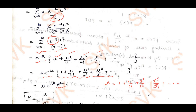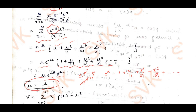Applying laws of indices, e to the power minus mu, multiplied by e to the power mu, gives e to the power 0, which equals 1. So 1 into mu equals mu. Therefore, the mean of Poisson's distribution equals mu itself.